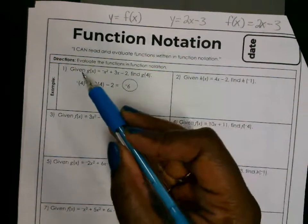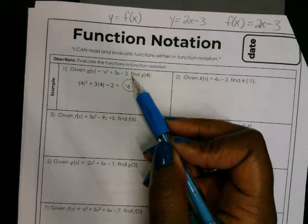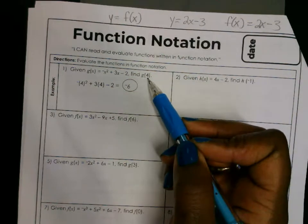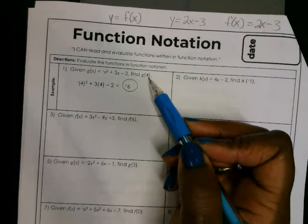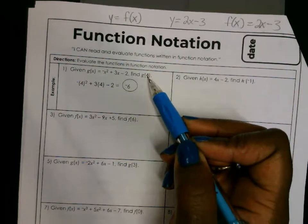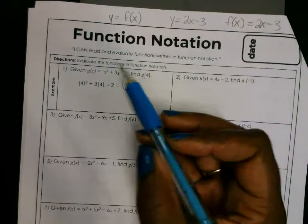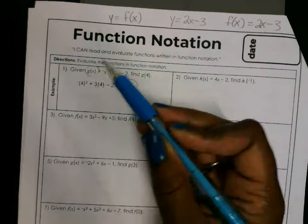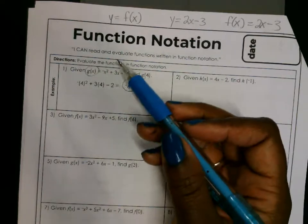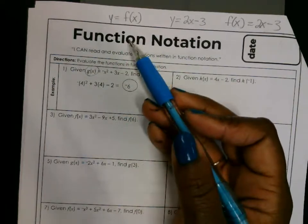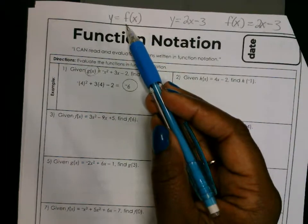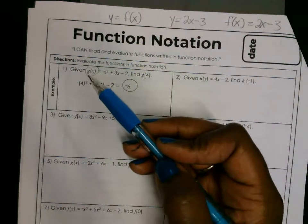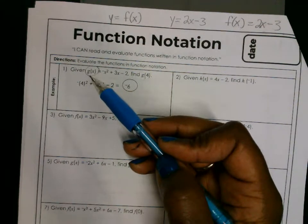In this first example, they give you a function and tell you to find g of 4. That means to find y when x is equal to 4. Remember, g of x, f of x, or h of x is another way to write y. You don't always have to use the letter f — you can use another letter — but it is another way to write y.